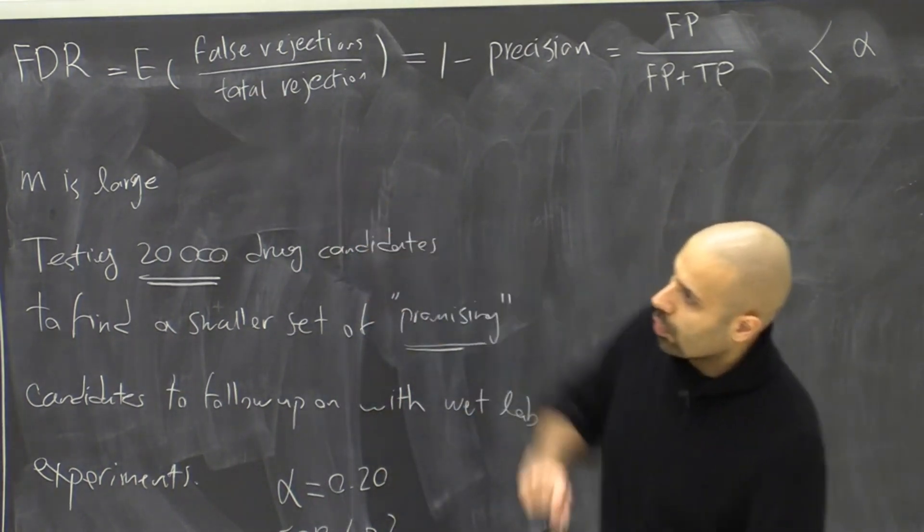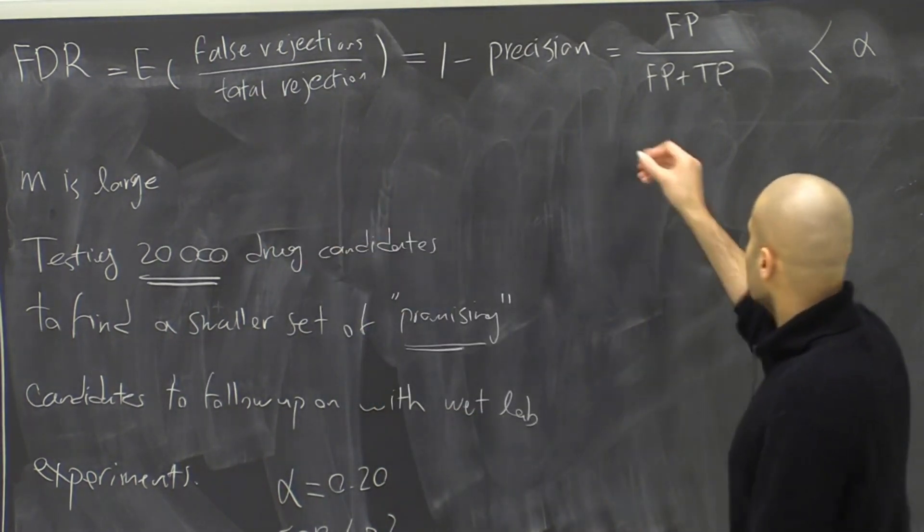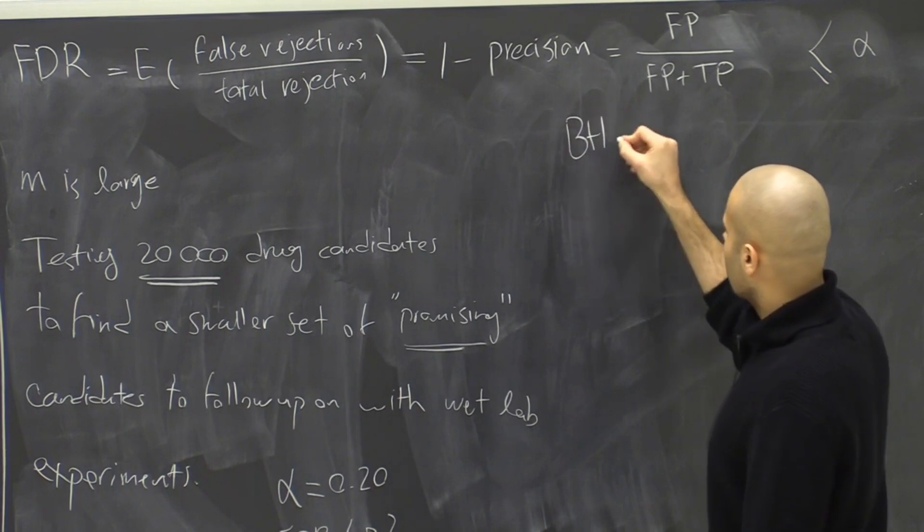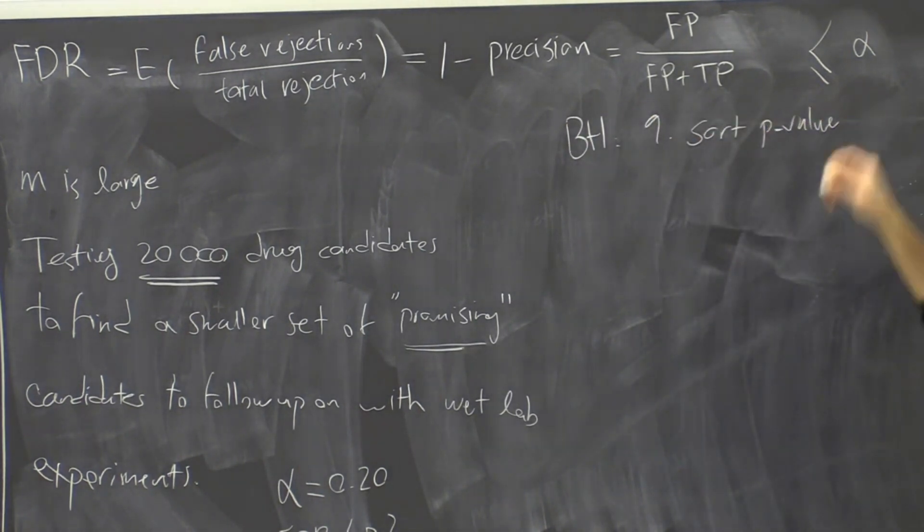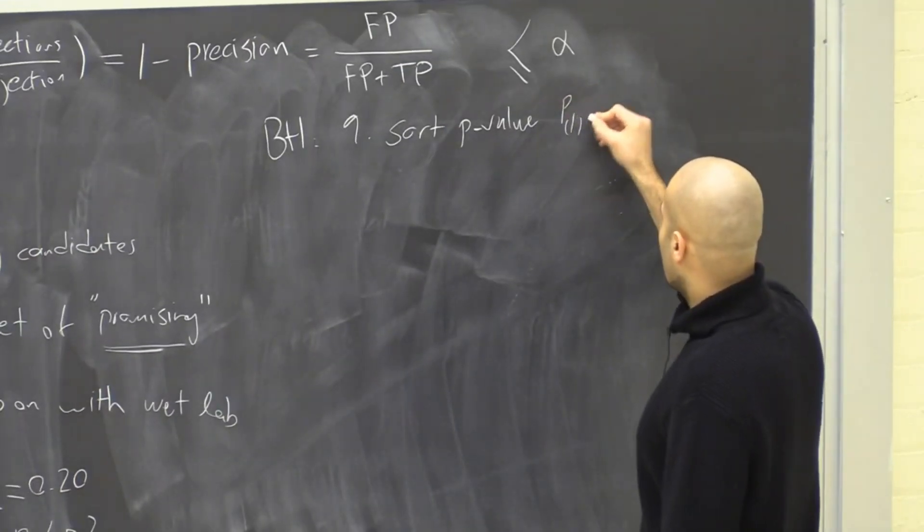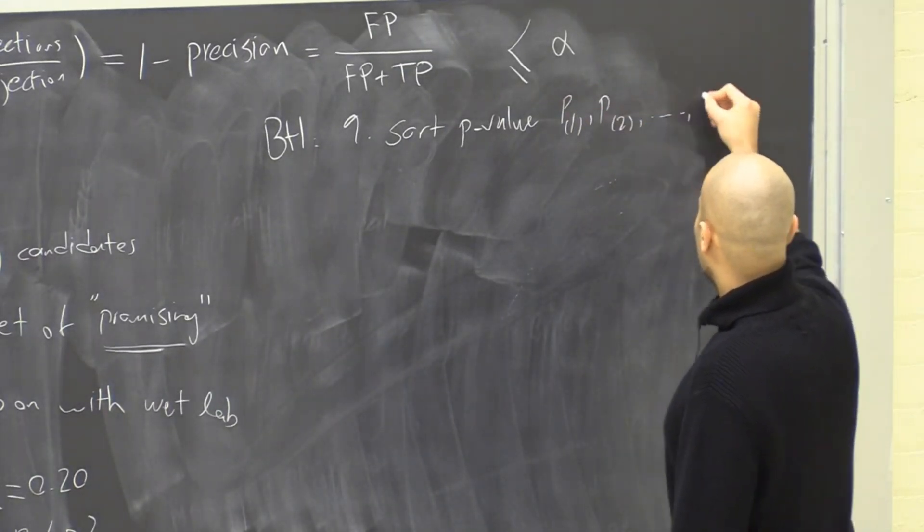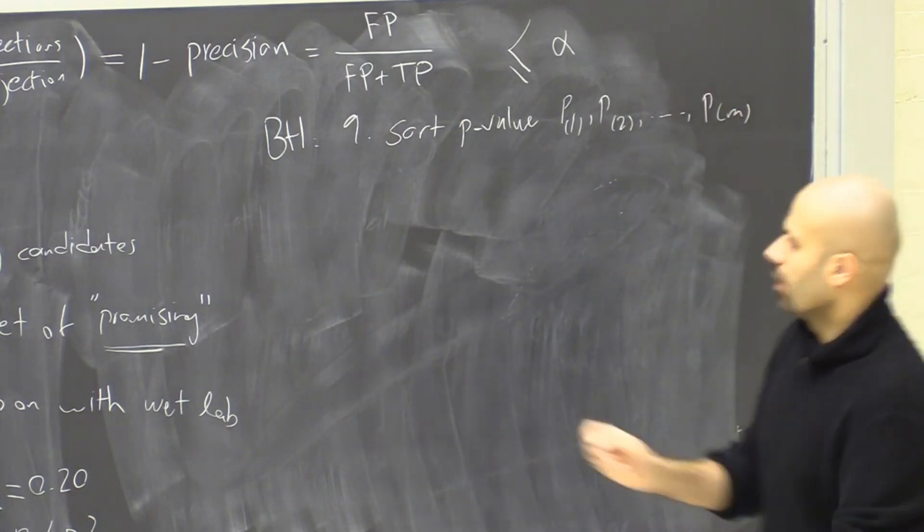So there's a procedure for this. The procedure is actually somewhat similar to Holm's correction. So the Benjamini-Hochberg procedure, first we need to sort p-values. These are still M tests, we have their p-values. So we sort the p-values to p1, p2, all the way to pM.